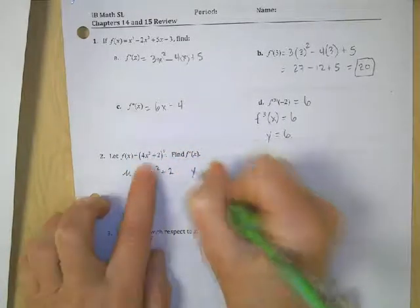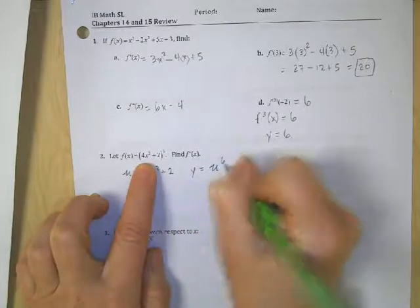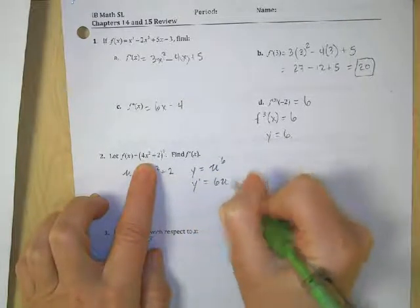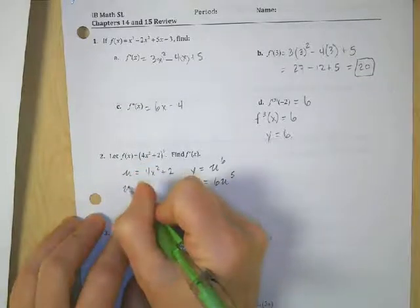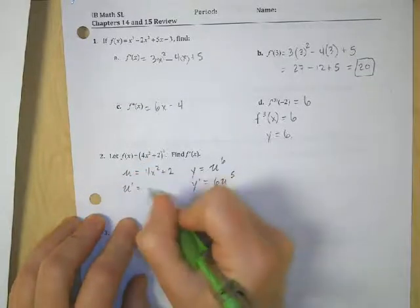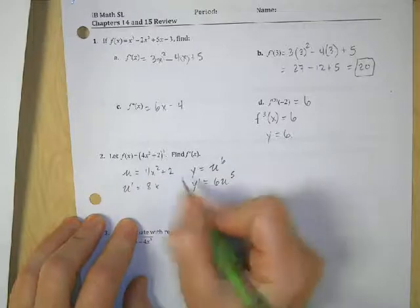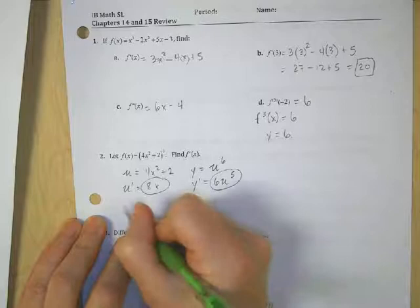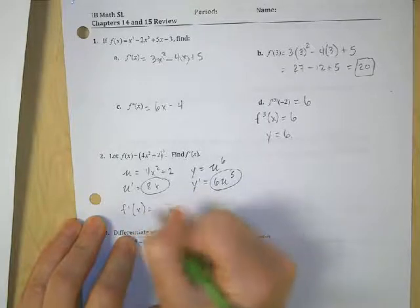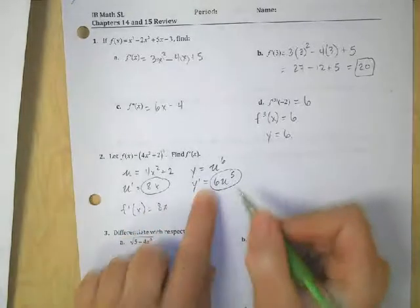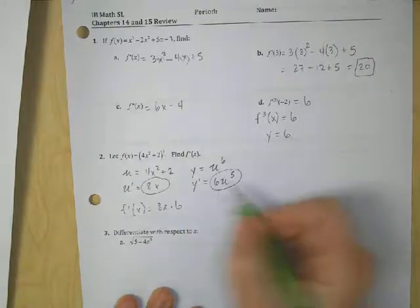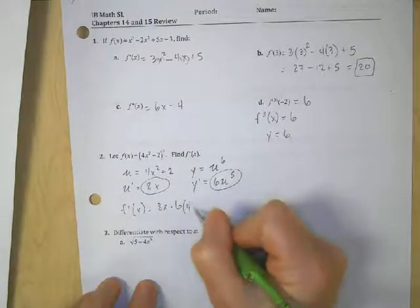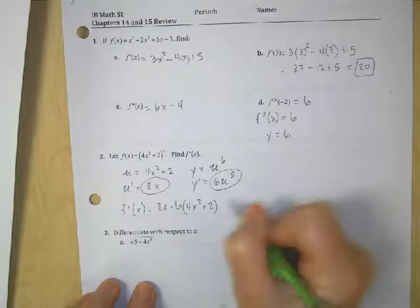So I can rewrite the equation as u to the 6. The derivative of that in regards to u is 6u to the 5th. So the derivative of my u here is 8x. Then the chain rule says I just multiply these together. So I'm going to have this times this. So f prime of x is going to be equal to 8x times 6 times u to the 5th. And I'm going to go ahead and plug back in my u for x squared plus 2. And that's to the 5th power.